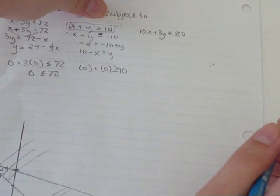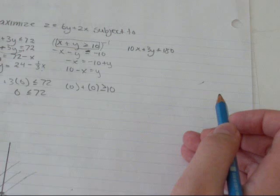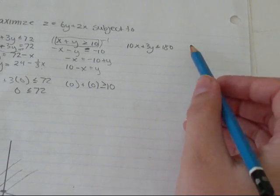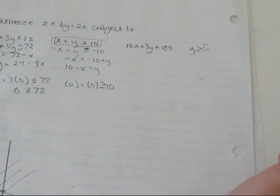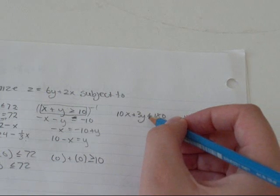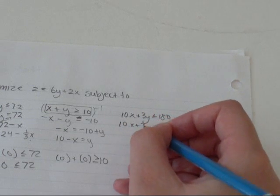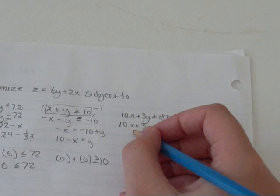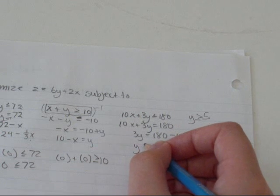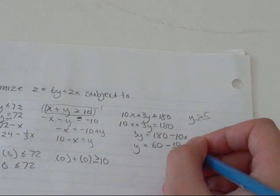Okay, last one. Well, not the last one. Really, I also had x is greater than or equal to 0, but that just makes it in the first quadrant. I did have y is greater than or equal to 5, which I'll put in last. So I'm going to change this again to an equal sign and then put it in y equals mx plus b form. So 10x plus 3y equals 180. 3y equals 180 minus 10x divided by 3. y equals 180 divided by 3 is 60 minus 10 over 3x.